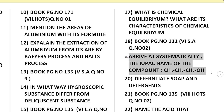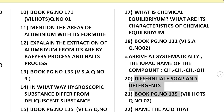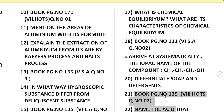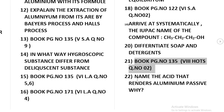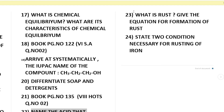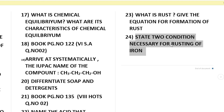Write the IUPAC name of the compound CH3-CH2-CH2-CH2. Write about soaps and detergents. Name the acid that renders aluminium passive. What is rust? Give the equation for the formation of rust. State the two conditions necessary for rusting of iron. All of these topics are important.